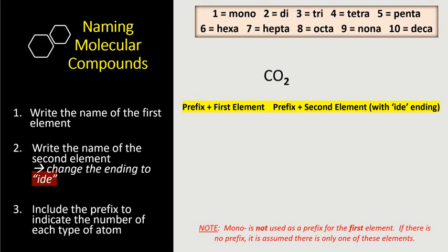Okay let's do another example. Let's write down the name of the first element which is carbon. Let's write down the name of the second element which is oxygen. Let's change the ending to ide. So we have oxide.